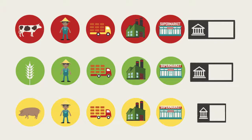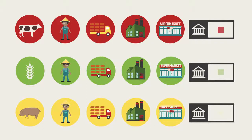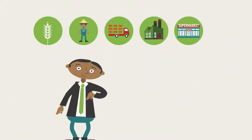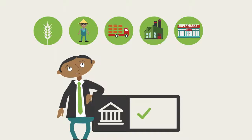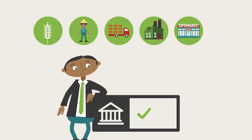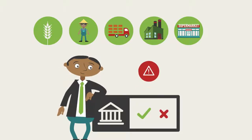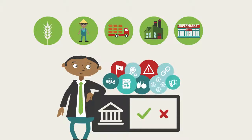A bank would adapt the scorings for each key value chain and alter the weightings based upon the specific value chain and its features. This ensures that loan officers adequately consider the value chain and the enterprise's management of operations, and reject any firms that are insufficiently prepared for risks.